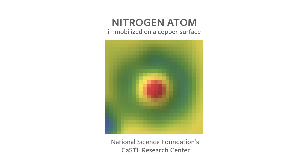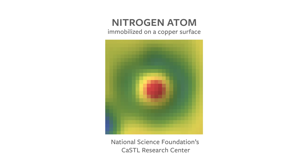This image was made from data collected from an actual scan of a single nitrogen atom fixed to a metal surface. What we're actually seeing here is the outside of what is called the electron cloud — the outer edges of the atom. The colors here are artificial, but this is the real shape of a nitrogen atom.